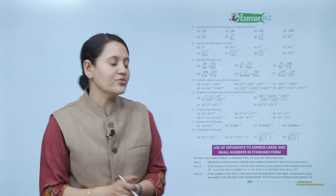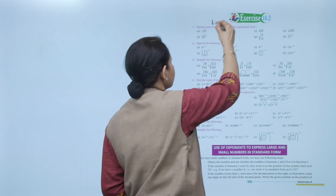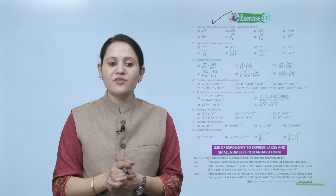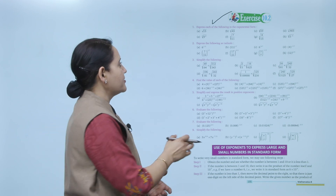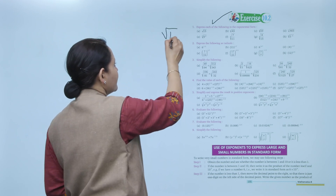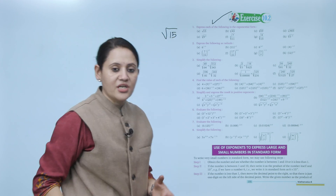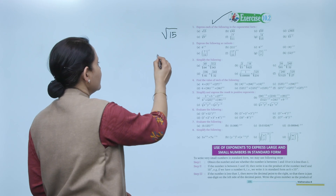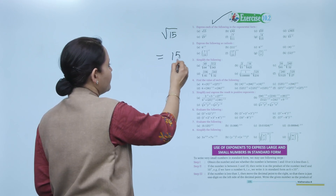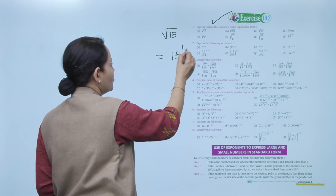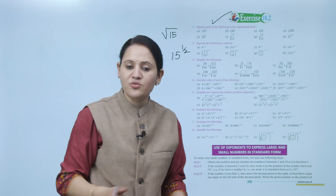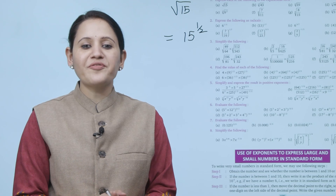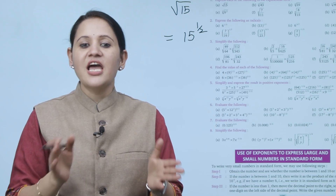Next is Exercise 10.2: express each of the following in exponential form. For example, √15 — whenever we remove the root, the power becomes 1/2. So √15 is written as 15 to the power 1/2. That is our answer. You have to practice all the questions of this exercise.